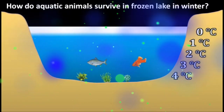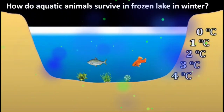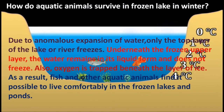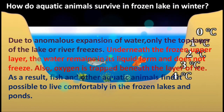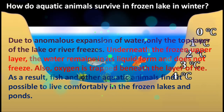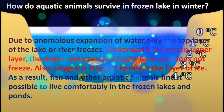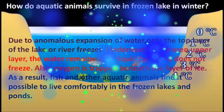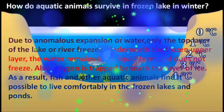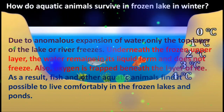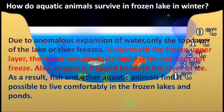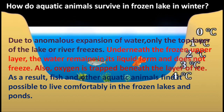How do aquatic animals survive in a frozen lake in winter? Due to the anomalous expansion of water, only the top layer of the lake or river freezes. Underneath the frozen upper layer, the water remains in liquid form and doesn't freeze.